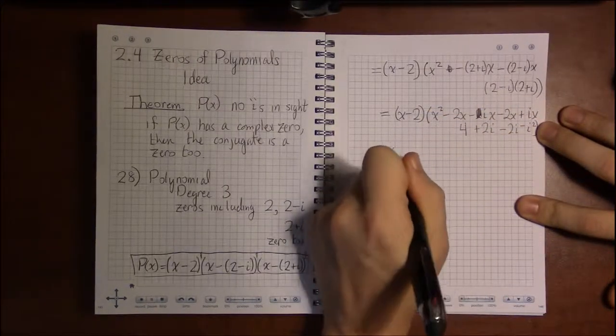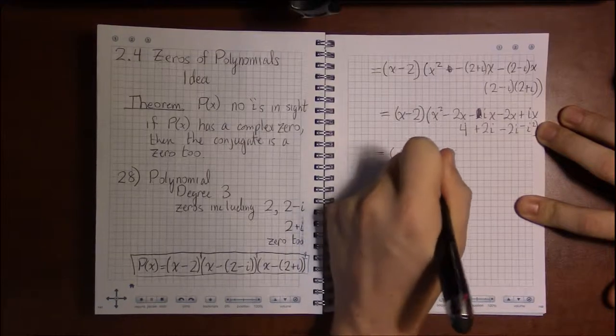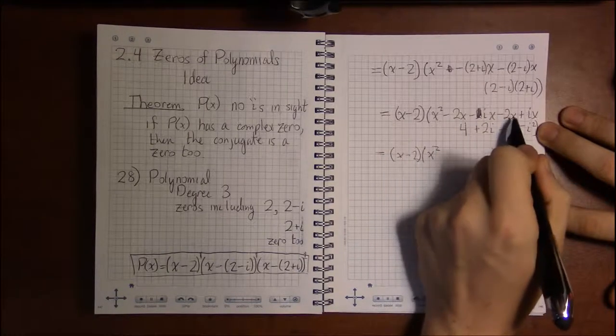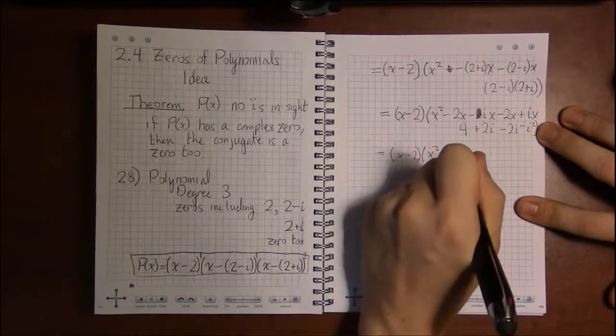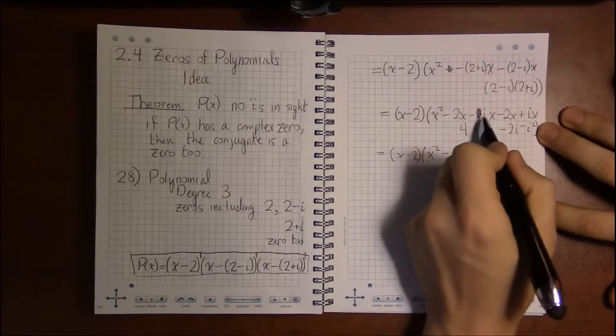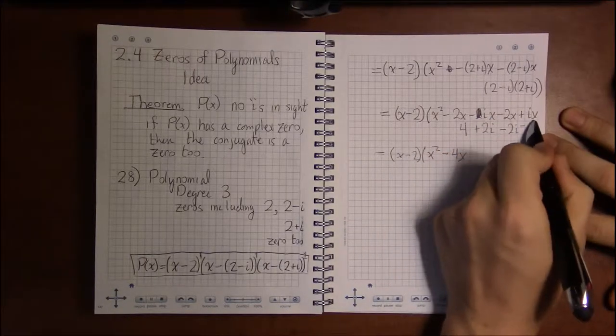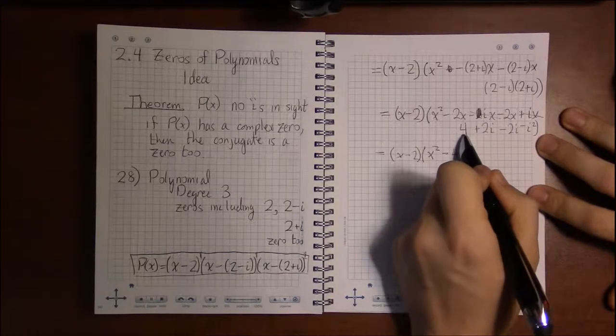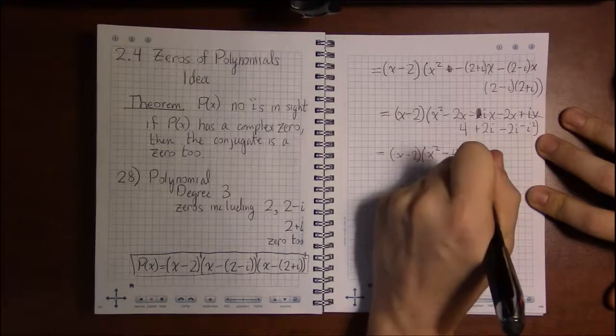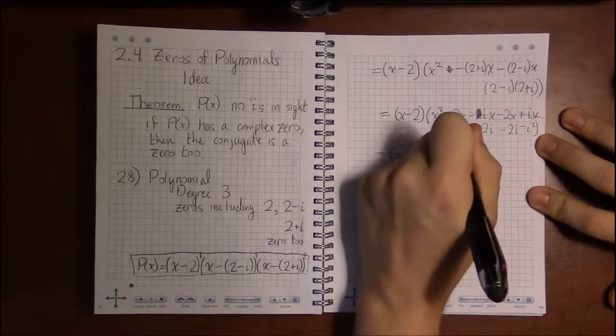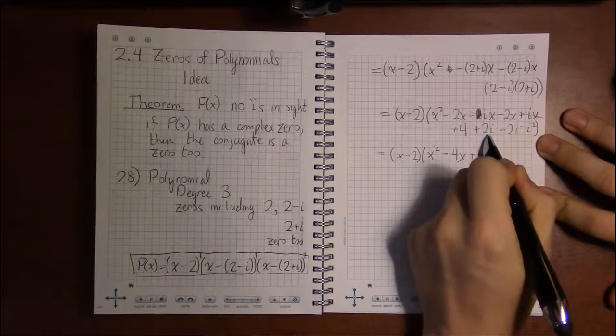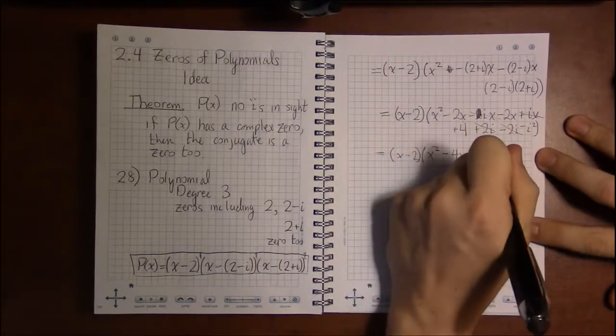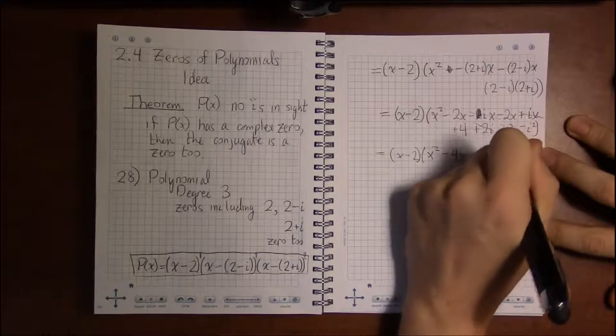So this is (x-2), let's see, x²-2x-2x is -4x. -ix+ix, these cancel. And then let's see, +4, +2i-2i, those cancel. -i². i² is -1.